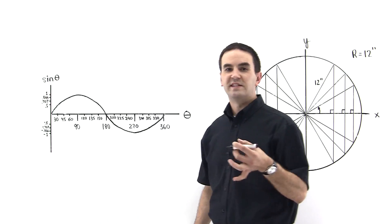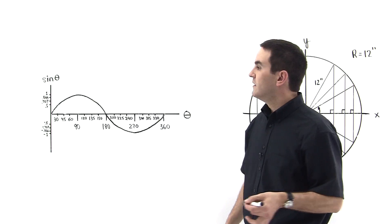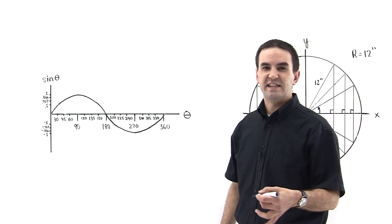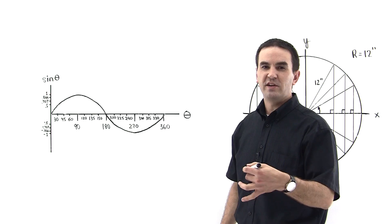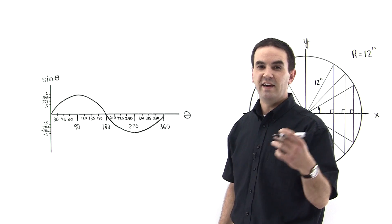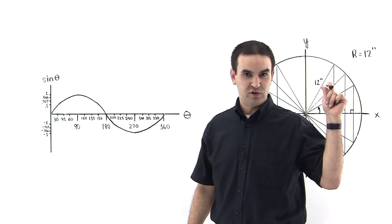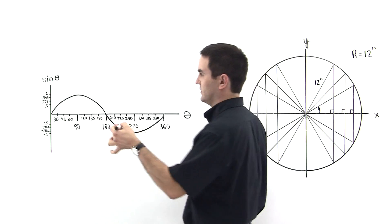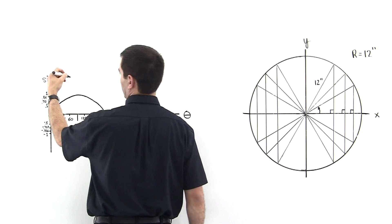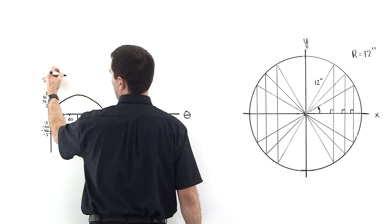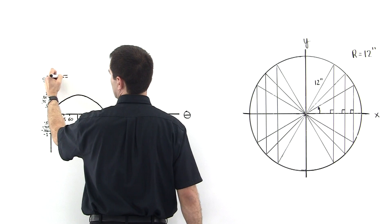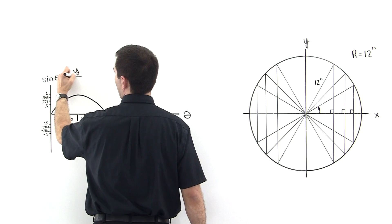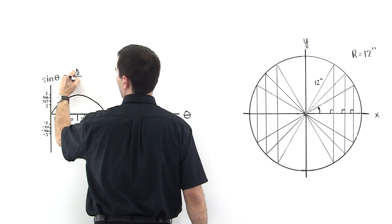So we contend that the sine of theta is simply equal to the ratio of the height of each respective triangle divided by the hypotenuse of each respective triangle, which is the radius. This is simply equal to y over r.